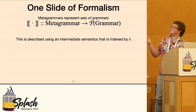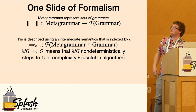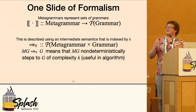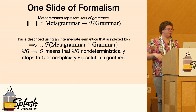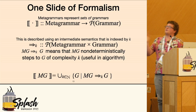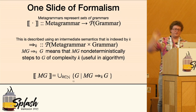And it's described using an intermediary semantics indexed by a natural number K, with a kind of big-step style semantics. It says if mg steps to G, that means it non-deterministically steps to a grammar of complexity K. And the actual semantics is just the union over all K of the things that are stepped to.